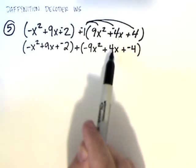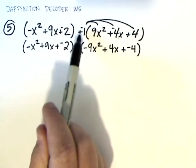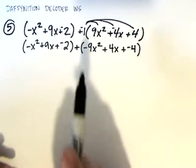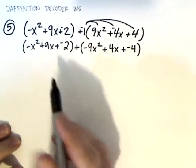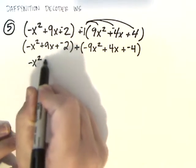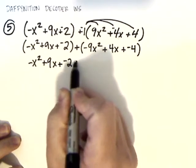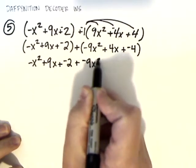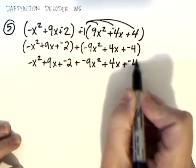So, as you can see, every term inside that trinomial had its sign changed because of the minus that was out there. Now, we can take parentheses away and think of this as just a problem where we're combining some like terms. So, I'm going to rewrite this with no parentheses. Negative x squared plus 9x plus negative 2 plus negative 9x squared plus 4x plus negative 4.